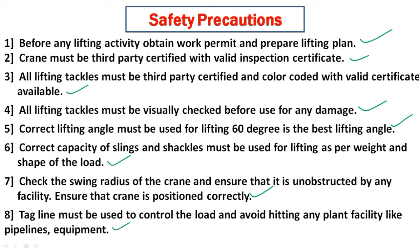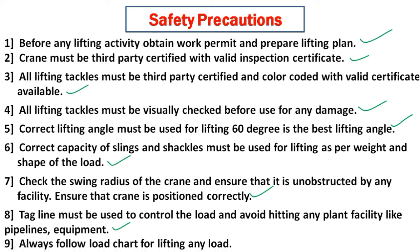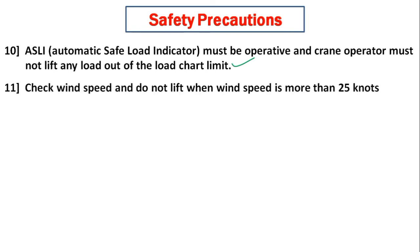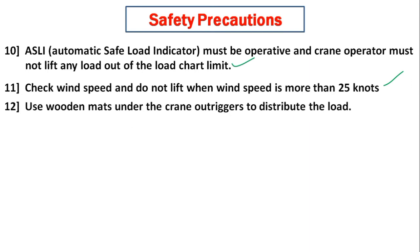A tagline must be used to control the load and avoid hitting any plant facility such as pipelines or equipment. Always follow the load chart for lifting any load. The automatic safe load indicator must be in operative condition, and the crane operator must not lift any load beyond the load chart limit. Check wind speed and do not lift when wind speed is more than 25 knots.